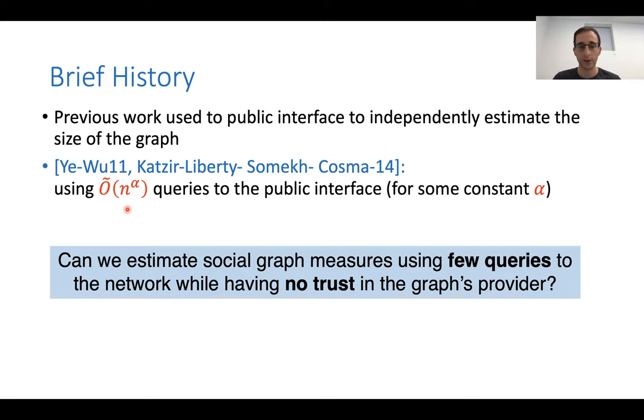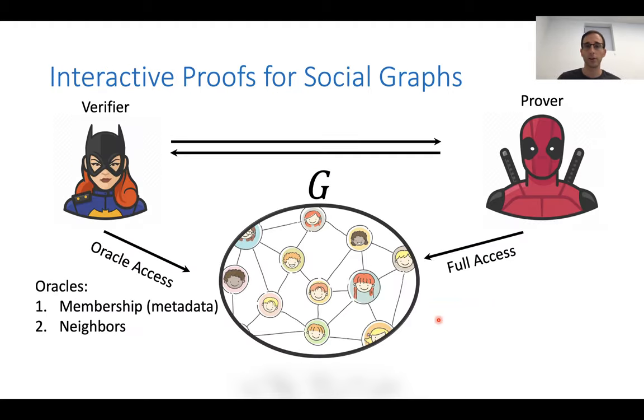And our main question is, can we get such an independent estimate of the size of social graphs or other measure using few queries to the network? So not poly n, more like poly log n, but still having no trust in the graph's provider. And to answer this, we introduce interactive proof for social graphs.